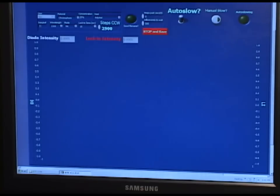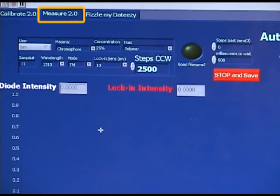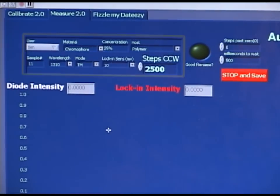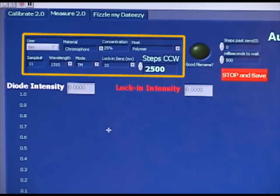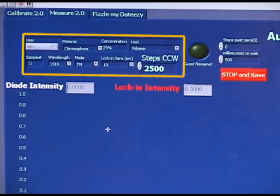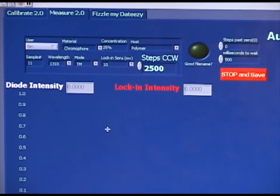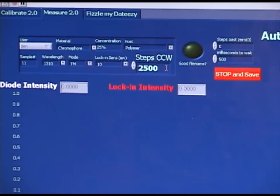Now that the sample has been calibrated and properly zeroed, we can begin measuring. To do this, we click on the Measurement 2.0 tab in the program and in the upper left-hand corner, we will see an informational box where we can put in the username, the chromophore material used, the host polymer, concentration, sample number, and the lock-in sensitivity used. This information will be attached to the data we take during measurement and stored on the computer as an electronic notebook.